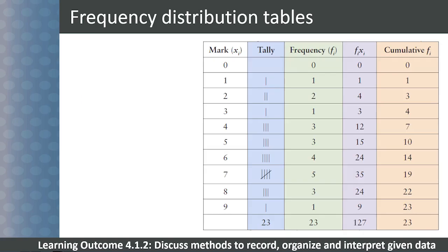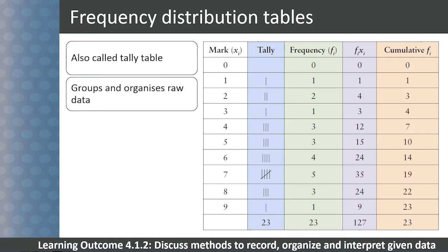A frequency distribution table, also known as a tally chart, is used to group and organize raw data. It represents the number of times a specific event occurs, that is, its frequency.